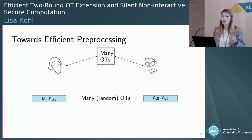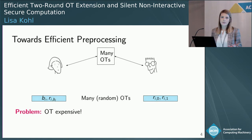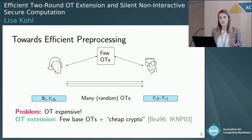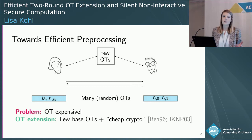How can we generate many OTs? You could run many OT protocols to get many OTs with random inputs, but OT is a public key primitive, so this is expensive and not something you want to do. Instead, as first proposed by Beaver in 1996, it's actually sufficient to do just a few oblivious transfers and then do some more communication with cheap symmetric cryptography.